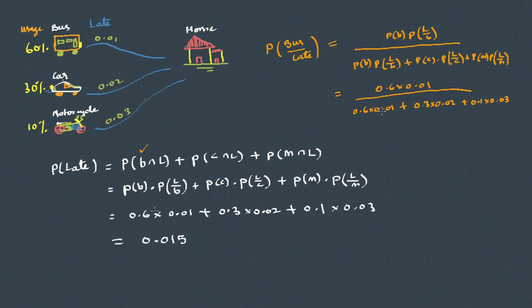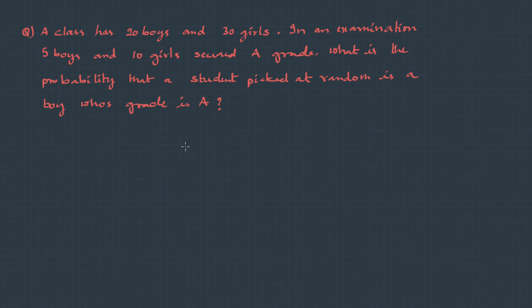And when we substitute, this becomes—here you can clearly see we are taking one of the cases from all possible cases—and when we solve this, it comes to be 2/5. Here we have a question: a class has 20 boys and 30 girls. In an examination, five boys and ten girls secured A grade.